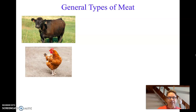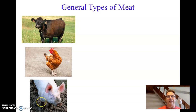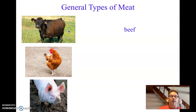The big three are these guys: we have a cow and a chicken and a pig. Two of them, however, when we're talking about the meat, we have to use a different word. For example, if you go to the grocery store, you're not going to see the word cow. You will see beef. So anytime you see beef, you know you're talking about a cow.